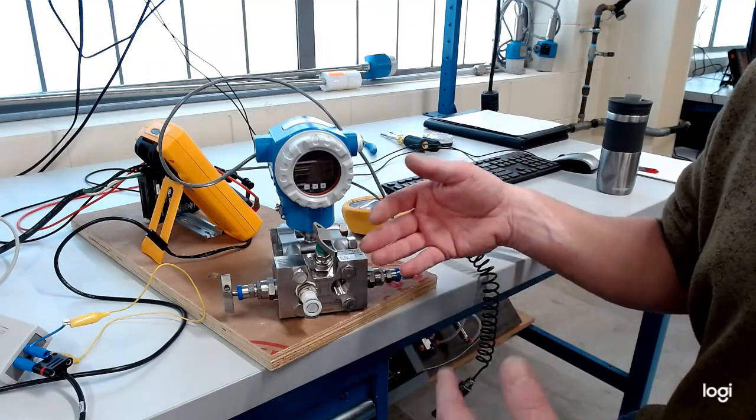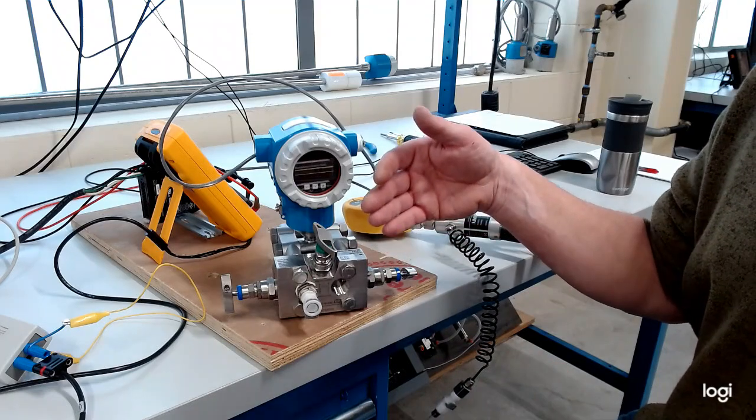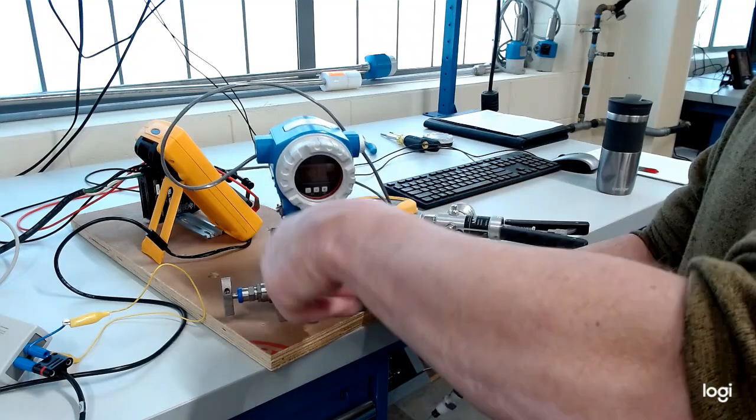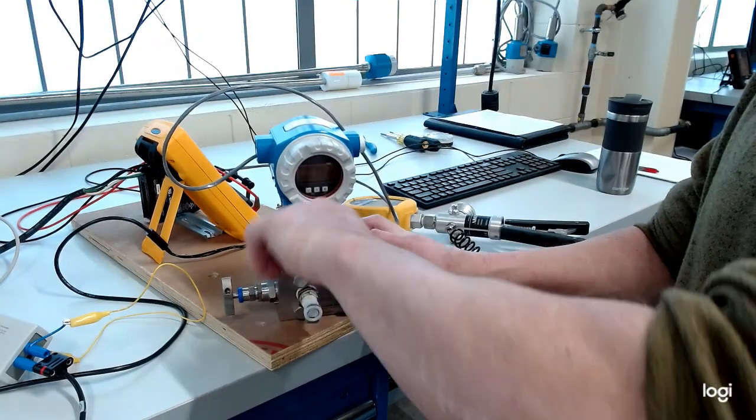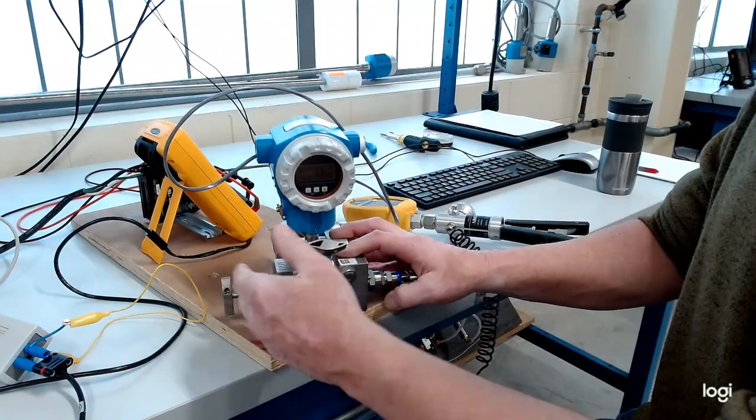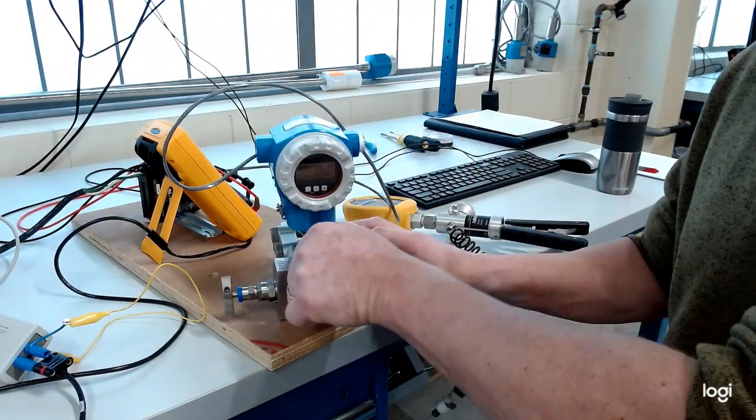If I had this valve closed, there would be a difference between atmosphere and what's actually inside that chamber. So I want to leave it open. We'll vent it, and then I'll close this equalizing valve down. And what that does is it isolates the high side of the transmitter from the low side of the transmitter.